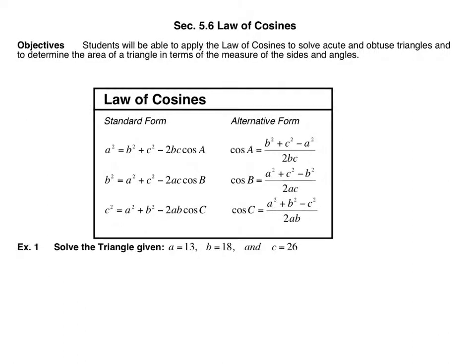We're going to look at the last section of chapter 5, section 5-6, which is the Law of Cosines. I find the Law of Cosines easier than the Law of Sines in many respects. The formula looks more complicated, but it's just easier to apply. You can only use Law of Sines if you have the angle and the side opposite that angle. Law of Cosines comes into play with SSS, which means we have no angles — if you have no angles, you can't use Law of Sines.